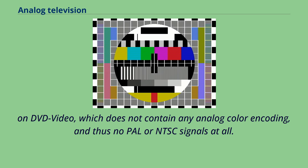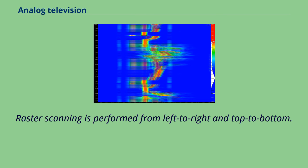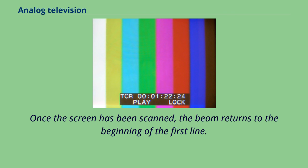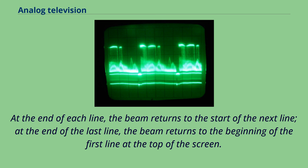Although a number of different broadcast television systems were in use worldwide, the same principles of operation apply. Raster scanning is performed from left to right and top to bottom. Once the screen has been scanned, the beam returns to the beginning of the first line. A cathode ray tube television displays an image by scanning a beam of electrons across the screen in a pattern of horizontal lines known as a raster.